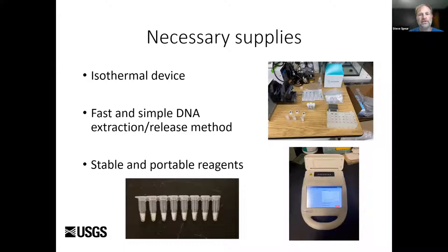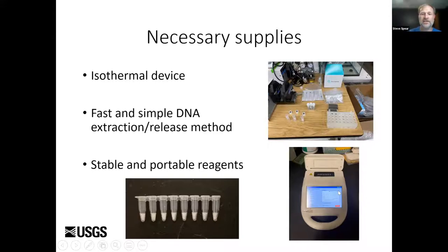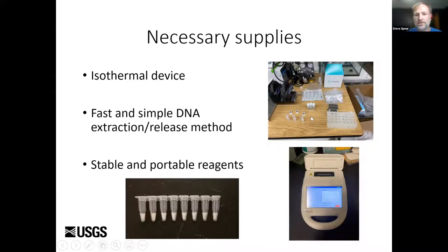To bring this into the field, you need a few things: an isothermal device — which could be as simple as a heat block, or a fluorometer that keeps a constant temperature and lets you see if you're getting amplification — and a fast and simple DNA extraction method, such as this cartridge syringe kit that takes about five to ten minutes to go from filter to DNA extract.